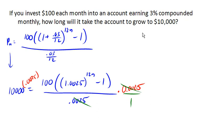So we got 25 equals 100 times 1.0025 to the 12n minus 1.